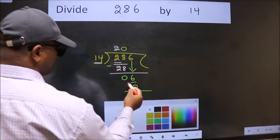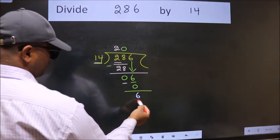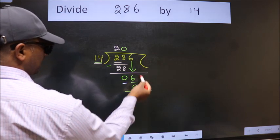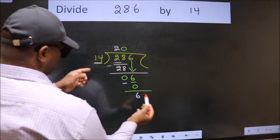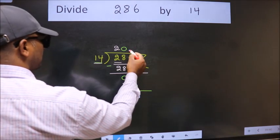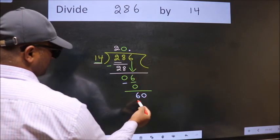Now we subtract, we get 6. Over here we did not bring any number down, and 6 is smaller than 14. So now we can put dot and take 0, so 60.